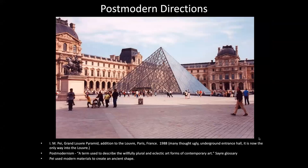Moving to post-modern directions — this is architect I.M. Pei and the Grand Louvre Pyramid. The Louvre is a very old building built up over many years in many different styles: Renaissance style from the 1500s, Baroque from the 1600s, and some Neoclassical elements. So it was already pretty eclectic.